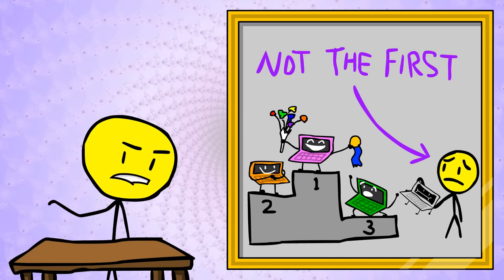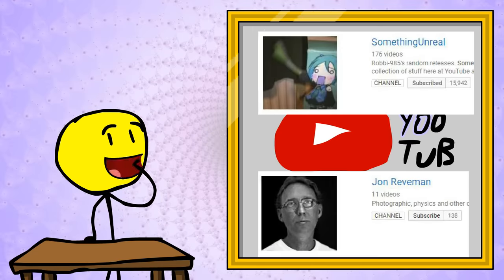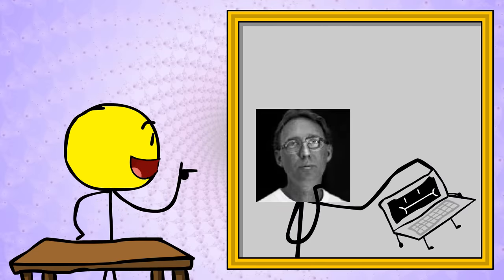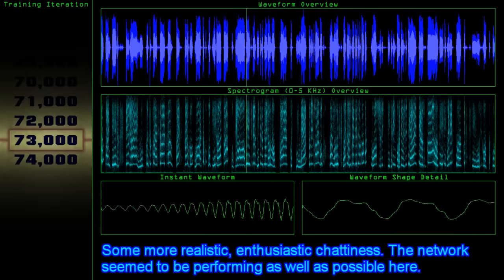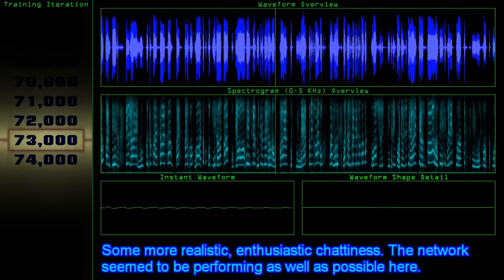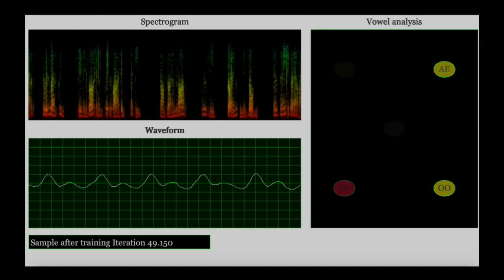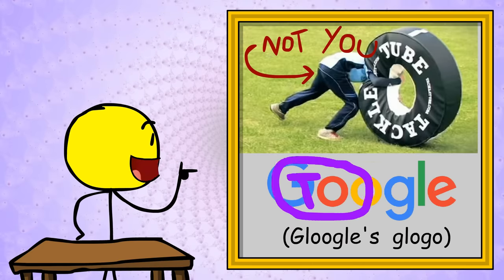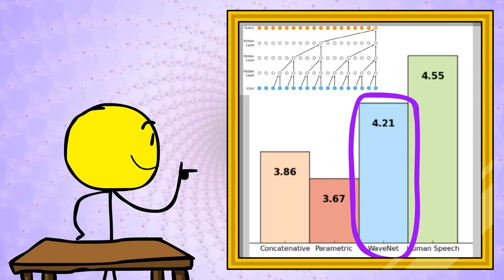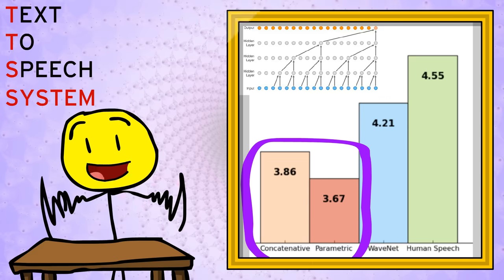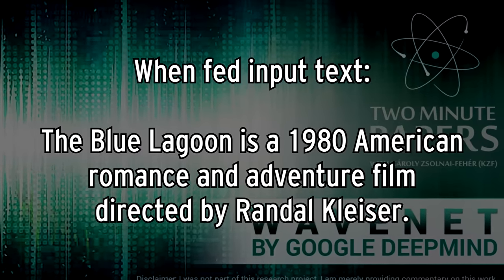I admit I'm not the first person to try something like this. YouTubers SomethingUnreal and John Reeveman have already posted impressive results of computers using neural networks to imitate human voices. And Google itself has tackled this task too, with Google DeepMind's WaveNet program producing better text-to-speech results than any other TTS system in the world. The Blue Lagoon is a 1980 American romance and adventure film directed by Randall Kleiser.